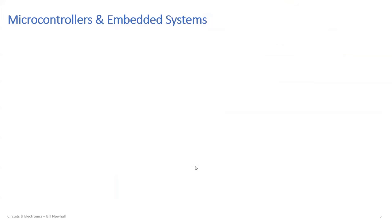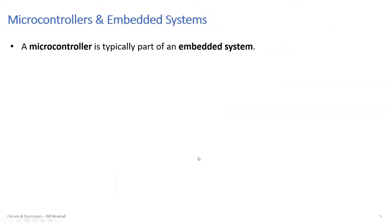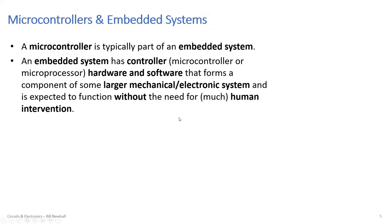A microcontroller is typically part of an embedded system. Embedded system engineers work on sensing and controlling systems — software written for something that is not a PC. An embedded system has a controller, which might be a microcontroller or microprocessor, plus hardware and software, all forming a component of some larger mechanical and electrical system. Usually these are meant to function without the need for human intervention, except for maybe a user interface. Embedded systems are electronic systems built into electronic and mechanical systems to do something.